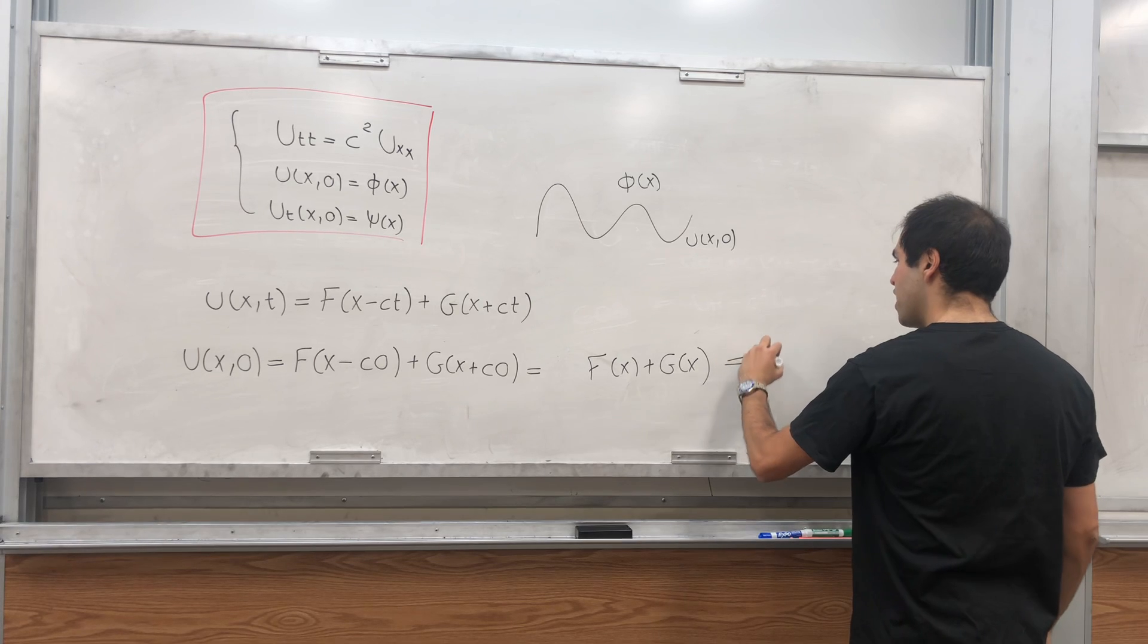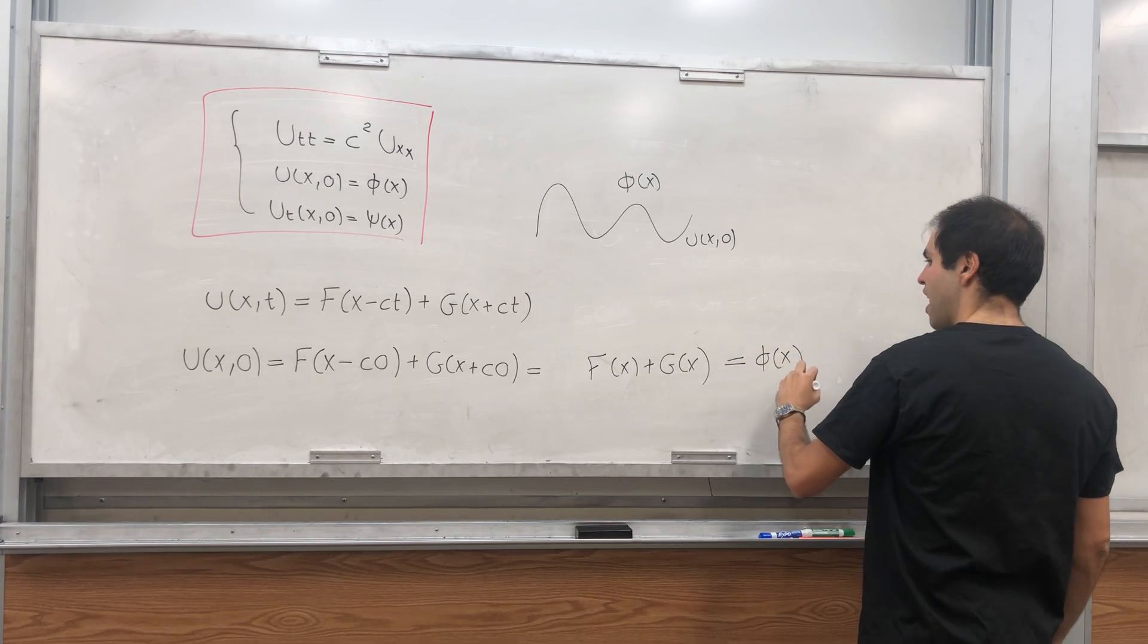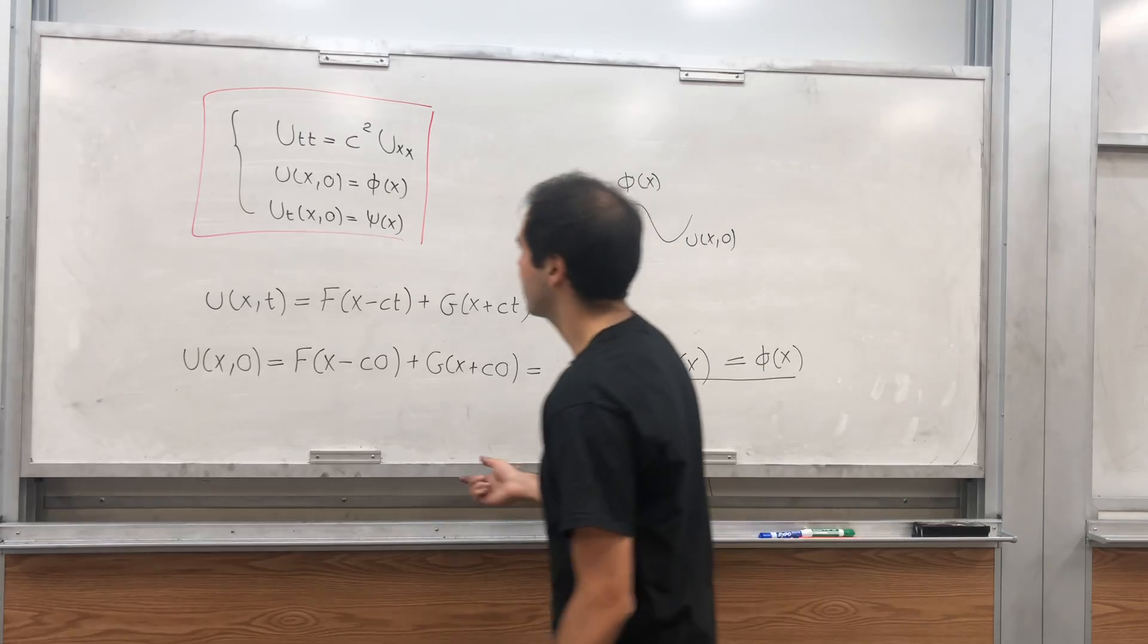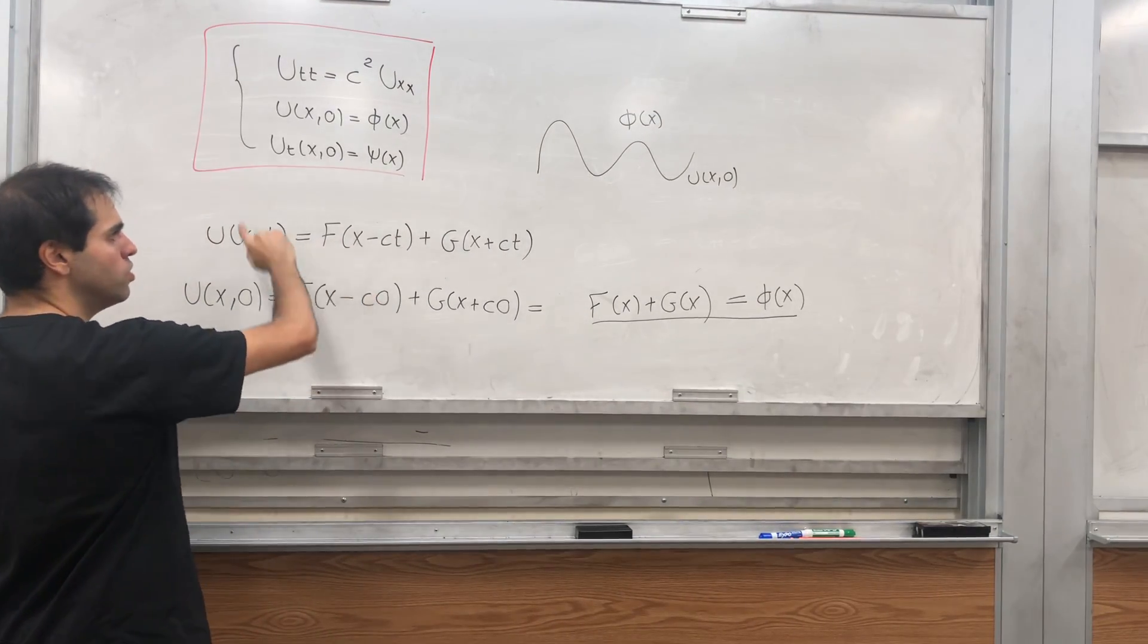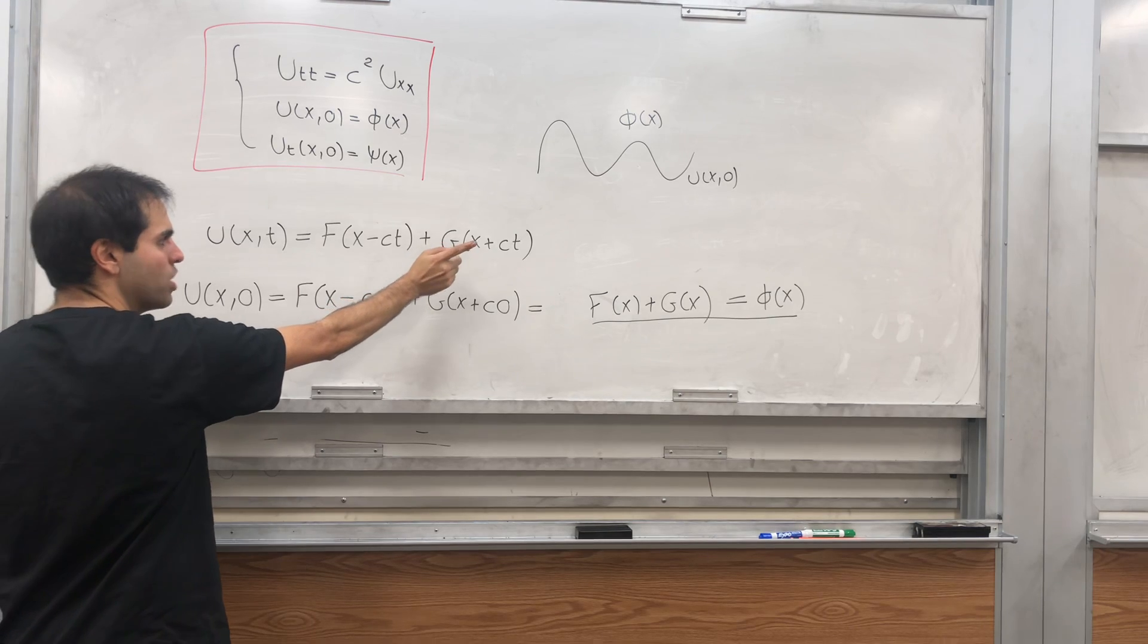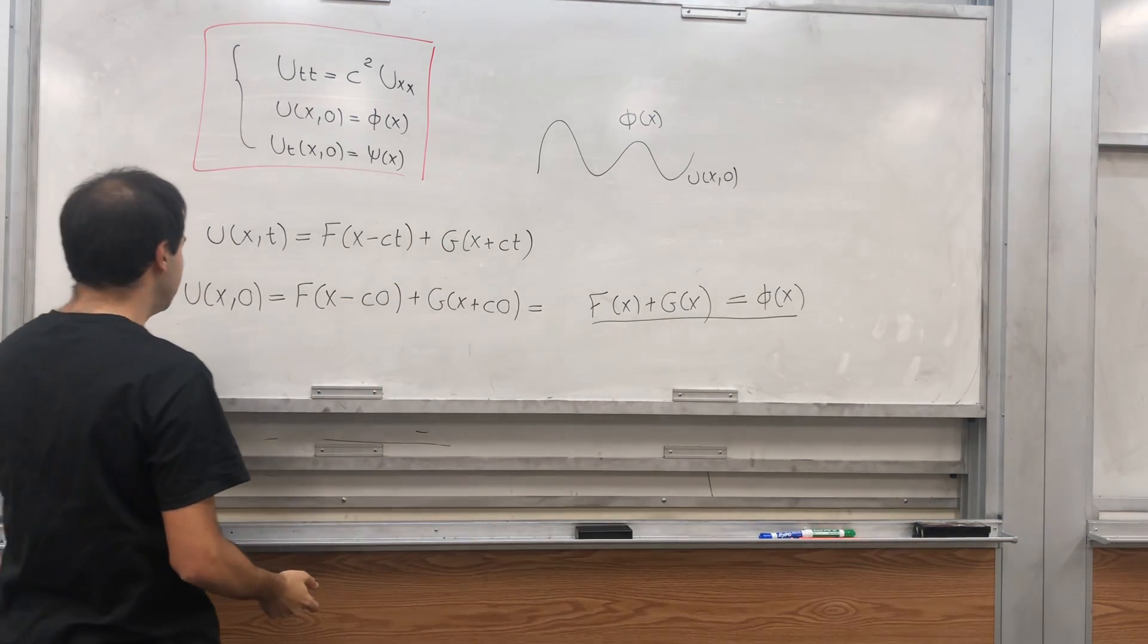So in here we already have our first equation: F plus G is phi. And then all we need to do is to differentiate this with respect to T and plug in T equals zero.